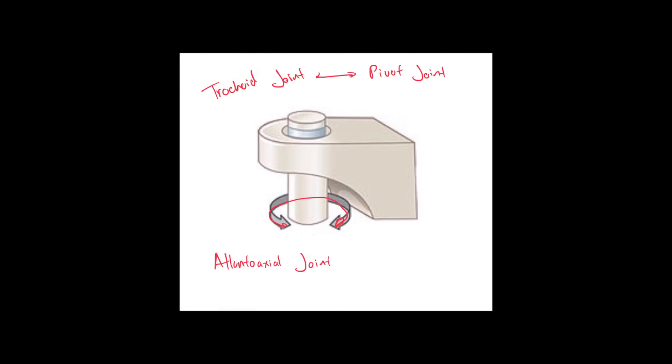An example of this would be the atlanto-axial joint. If you think about what the atlas looks like and the axis looks like, here, this kind of looks like the dens of the axis, does it not? And then this would be the anterior arch of the atlas. When there is movement within the atlanto-axial joint, the dens of the axis is pivoting within the anterior arch, therefore becoming a trochoid joint.